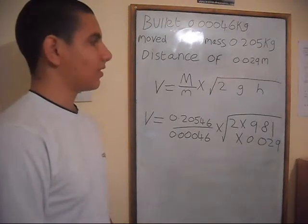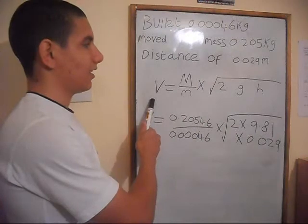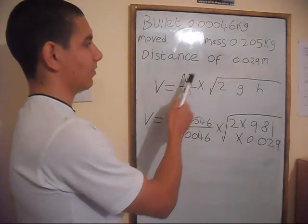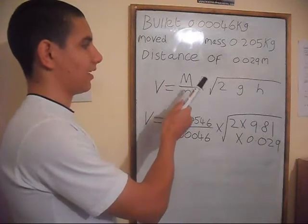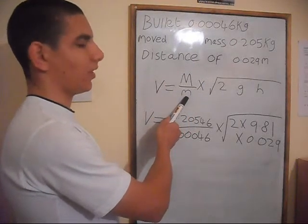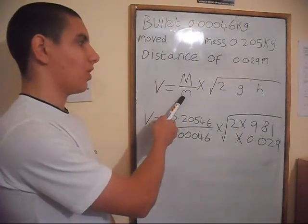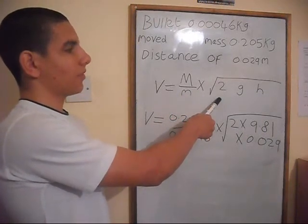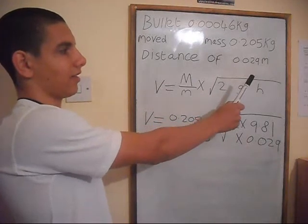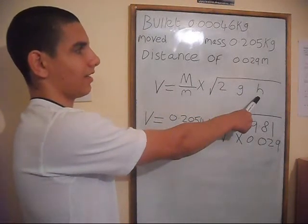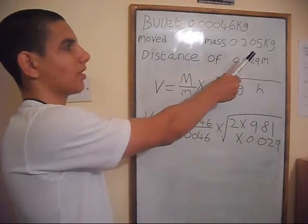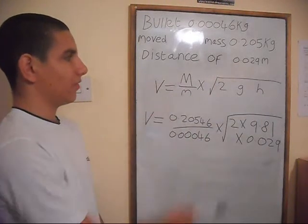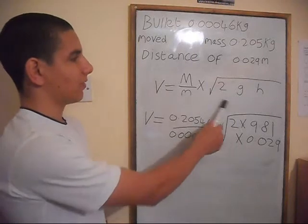The easiest way is using the equation: velocity equals the moved mass (large M) divided by the bullet's mass (small m), multiplied by the square root of 2 multiplied by gravitational field strength, multiplied by the height the mass was moved, which is 2.9 centimetres. We substitute the values for this equation.